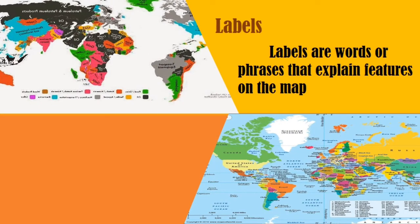Next are labels. These are actually words or phrases that explain features on the map. As you can see in the picture shown on the slide, the map has lots of labels explaining that specific feature on the map.